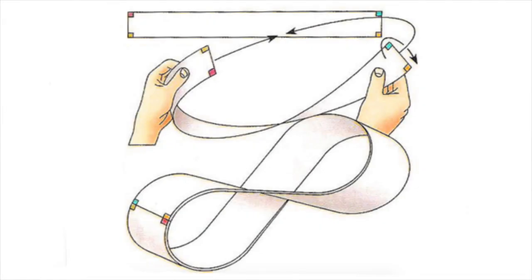Take a strip of paper, give it a half twist, and then tape the ends together. The result is a Möbius band, a shape that has only one side.